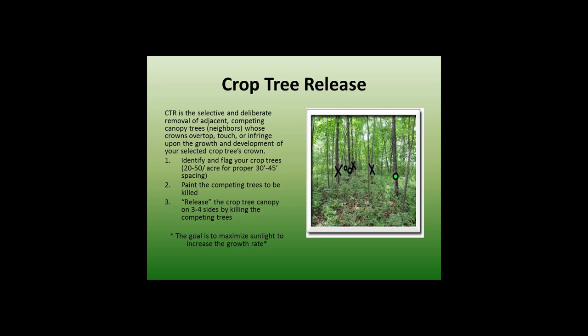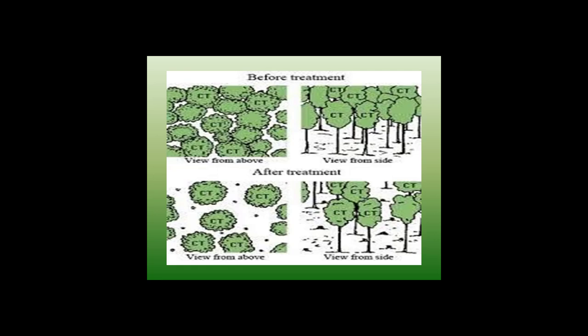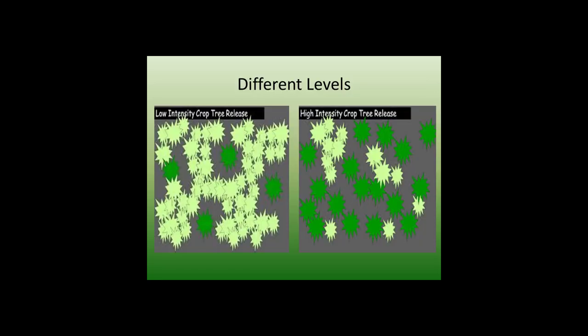The goal is ultimately to maximize sunlight to increase the growth rate. From an aerial view, you want to release the crop tree from one side all the way up to four sides. Here are examples of what it looks like from above and from the side — the competing trees and subsequent management results. This can be done at different levels depending on the size of trees and the composition of your forest. If you have relatively few crop trees, it's not necessary to kill everything else, but you want to open up as much area as you can.